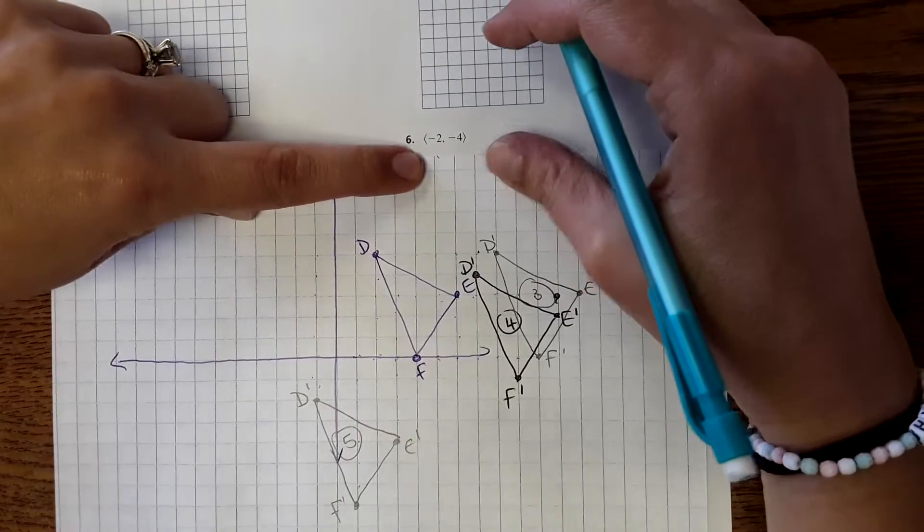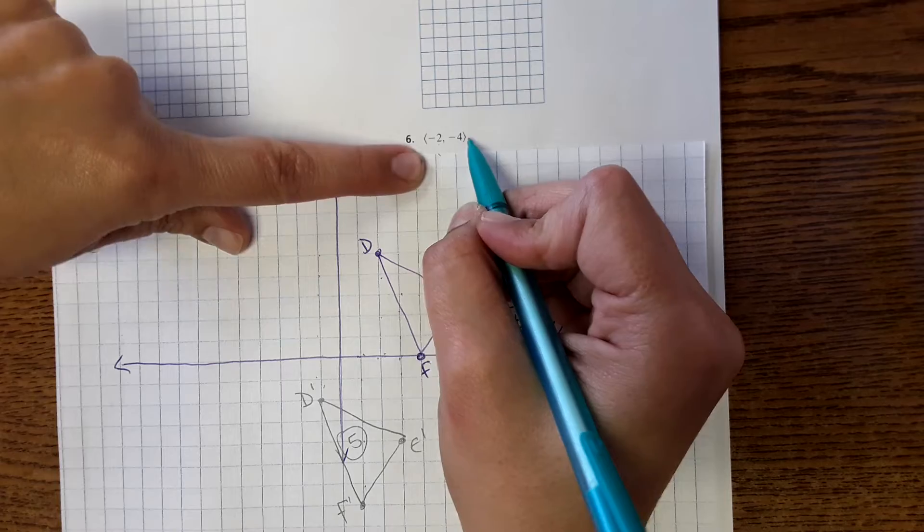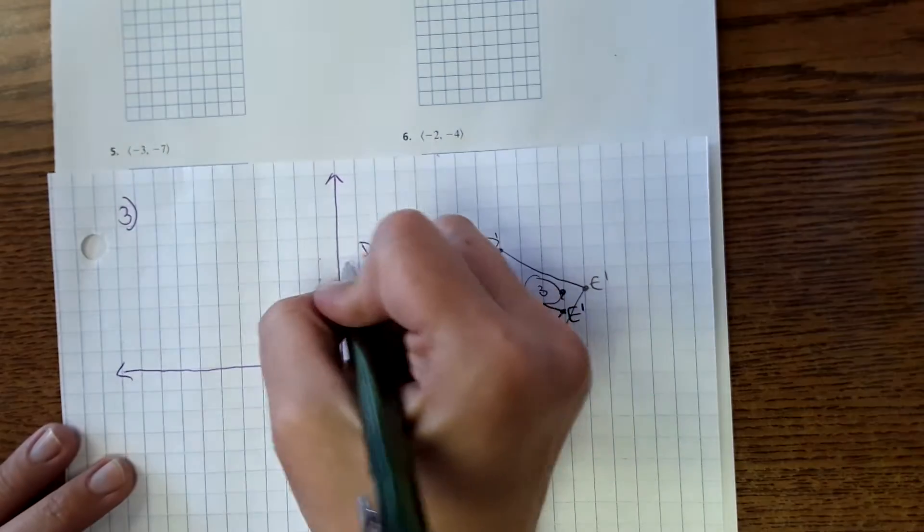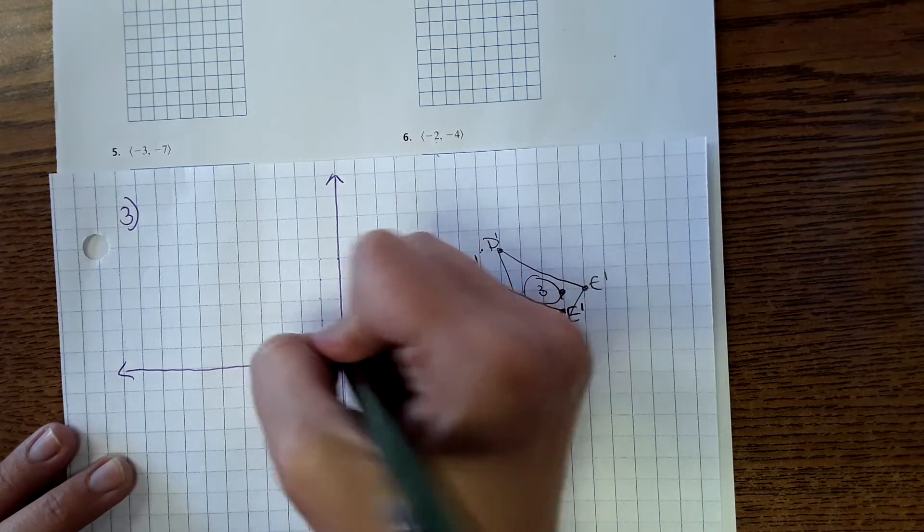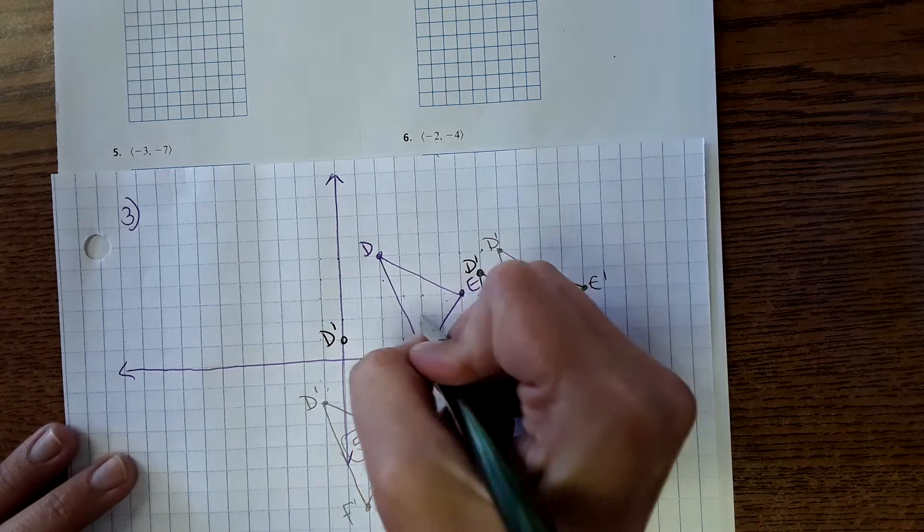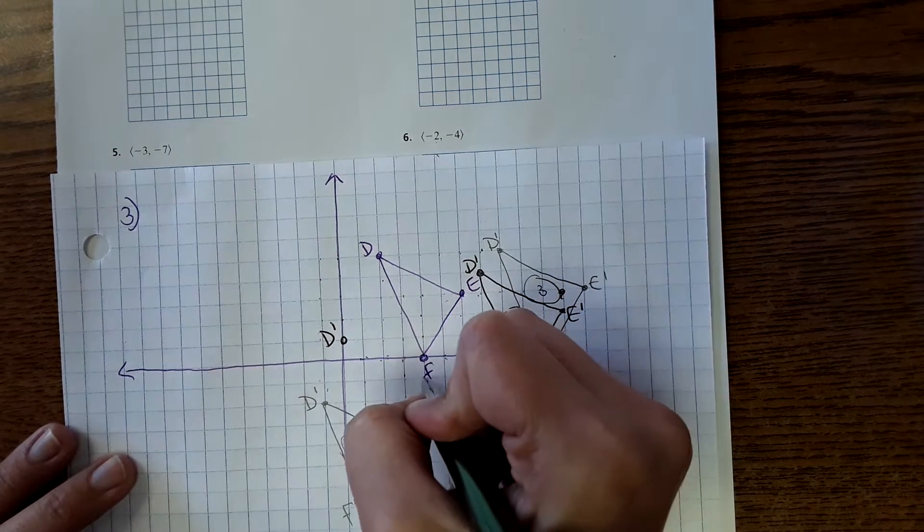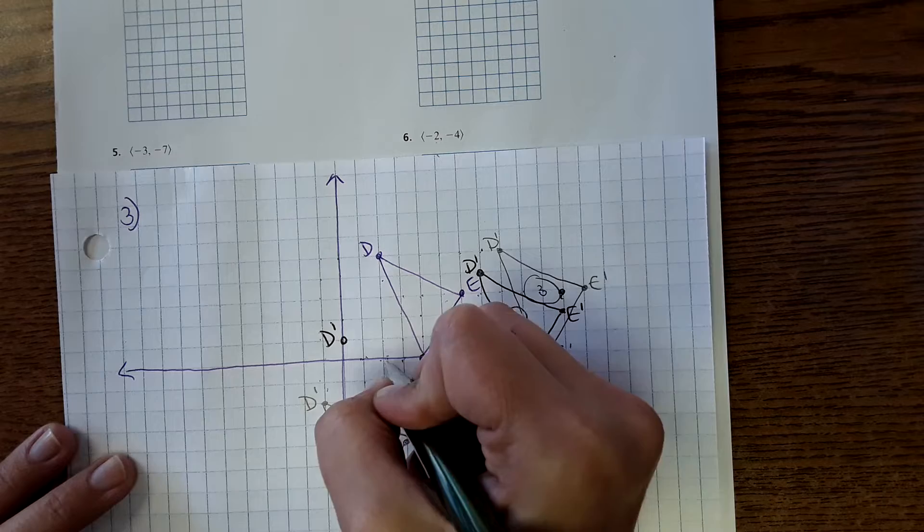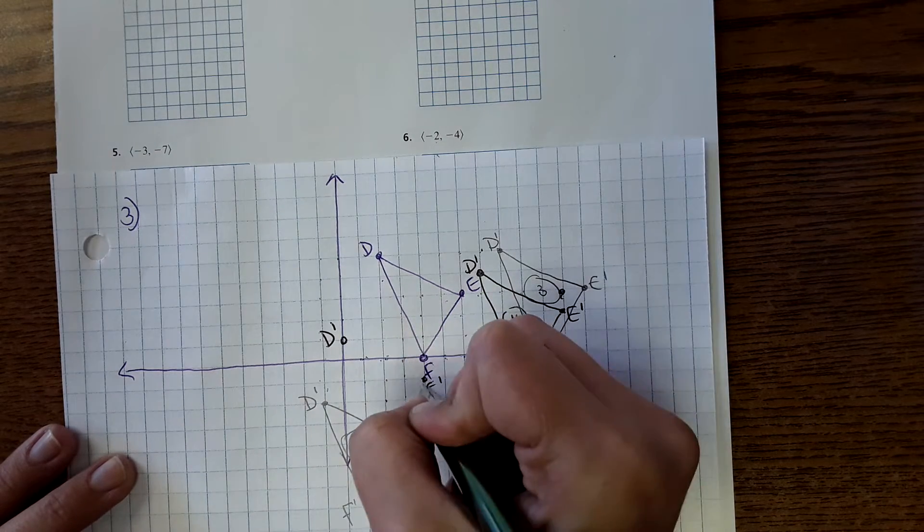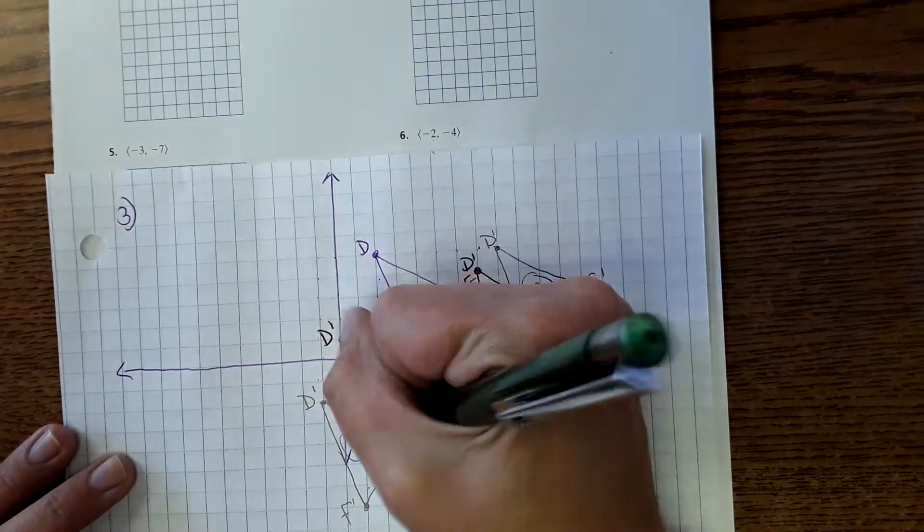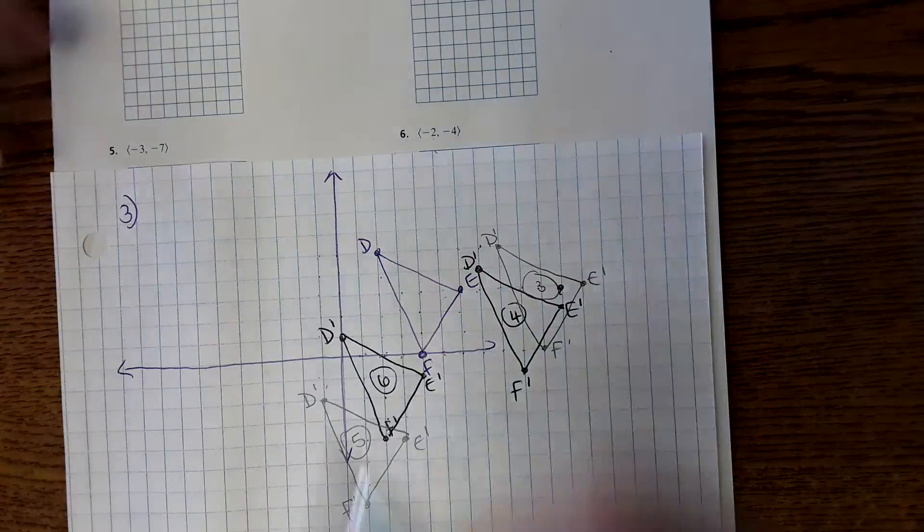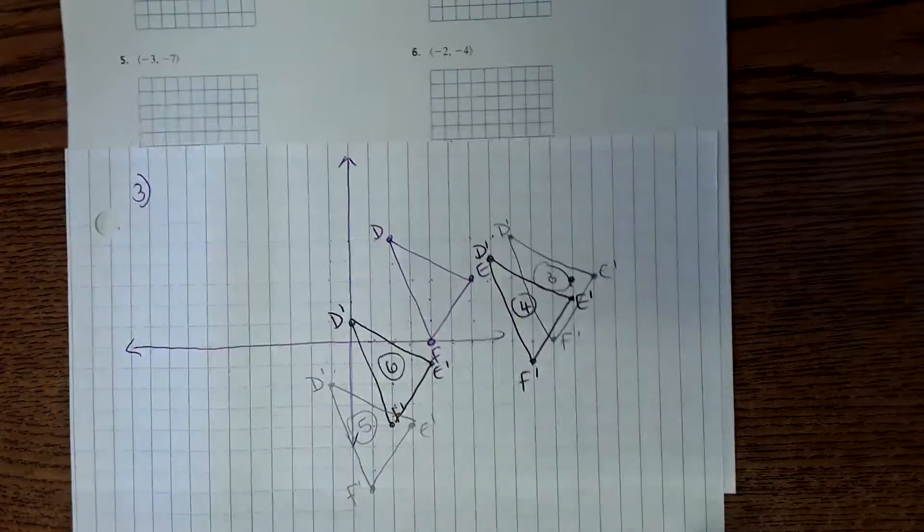And then number 6, it is negative 2, negative 4, so it's going to go to left 2, down 4. And here is the triangle here, so this would be number 6. Okay, so there is 3, 4, 5, and 6.